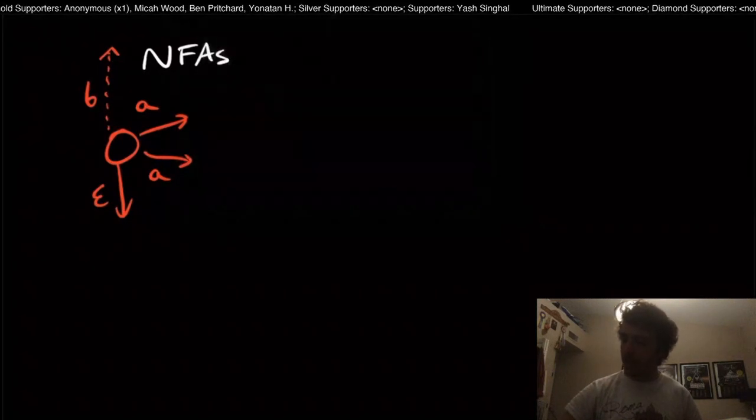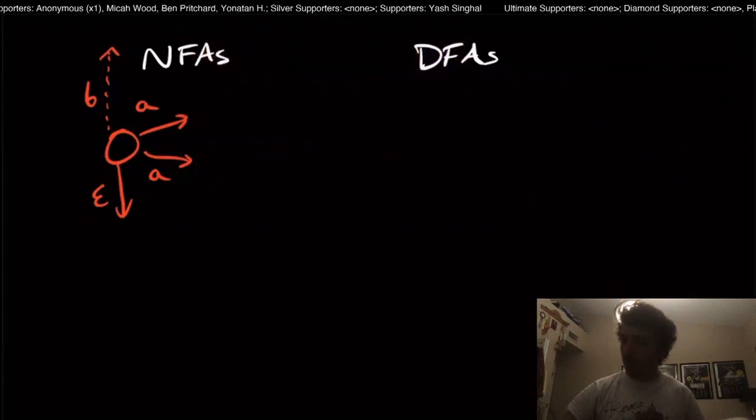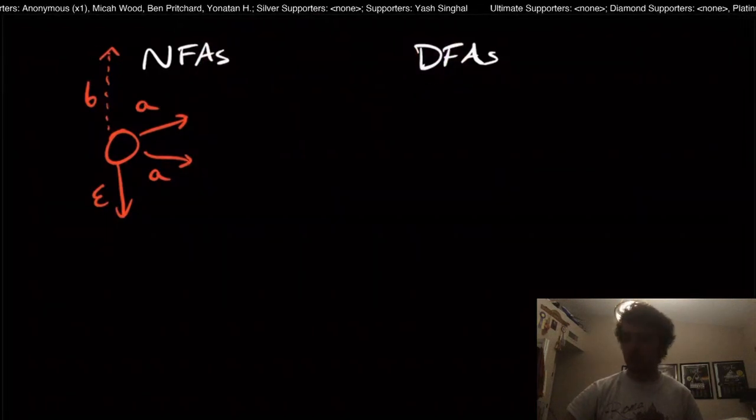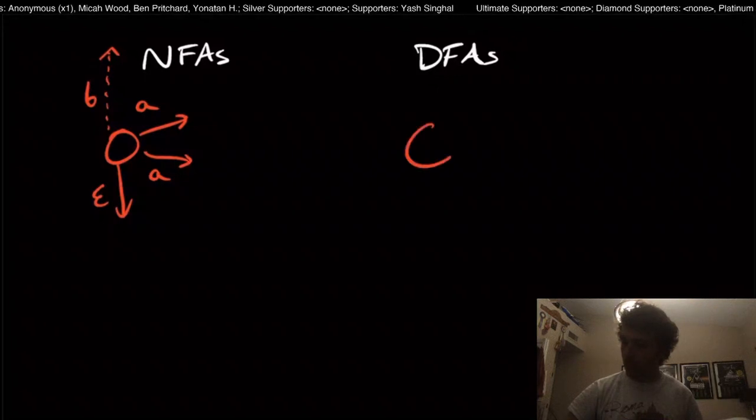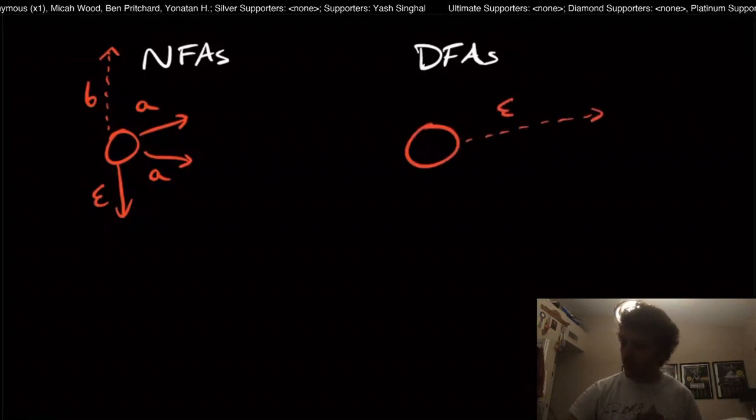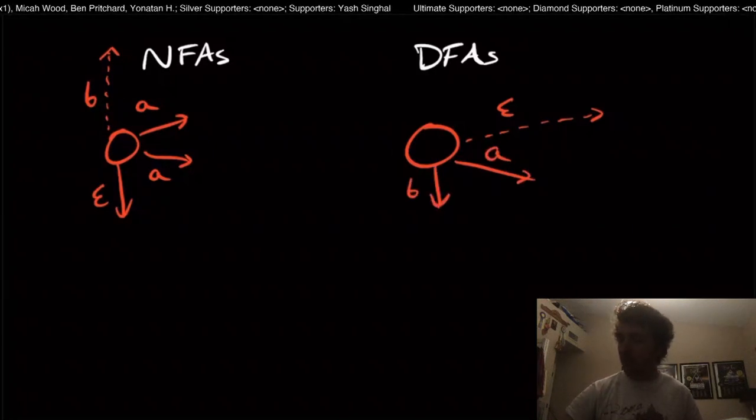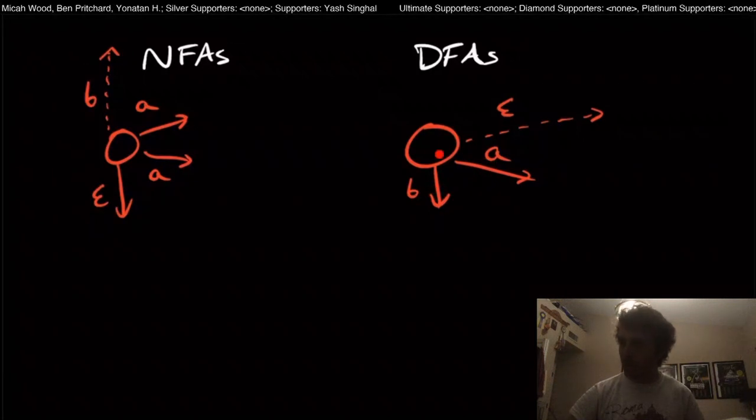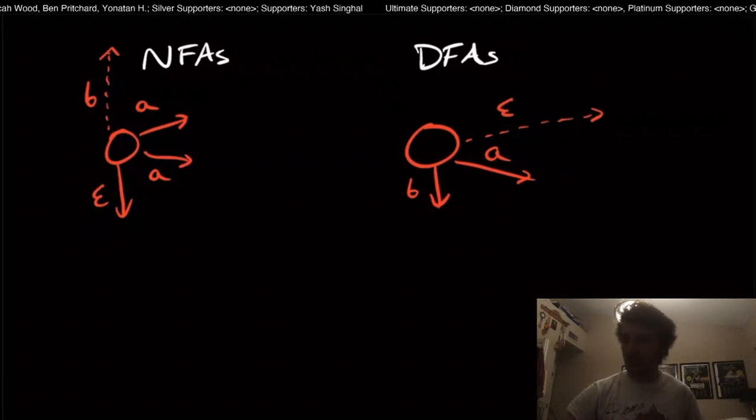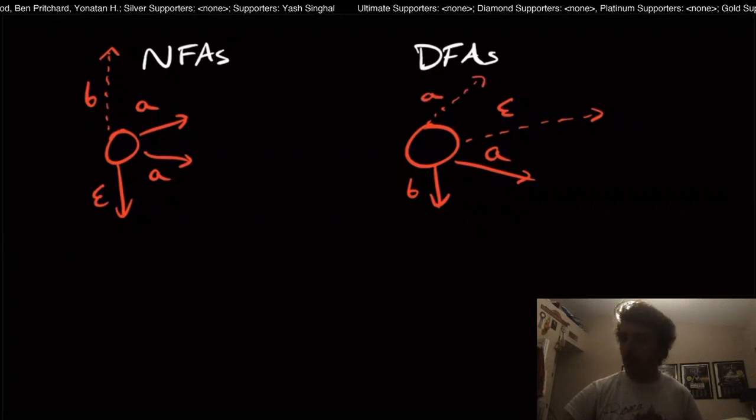And at the other end, we have DFAs, where the D stands for deterministic. So here, we can't have epsilon transitions at all. Every character has to appear at least once. Let's just say A and B in this case. So there must be an A and a B transition. And there can't be, for example, another A transition.